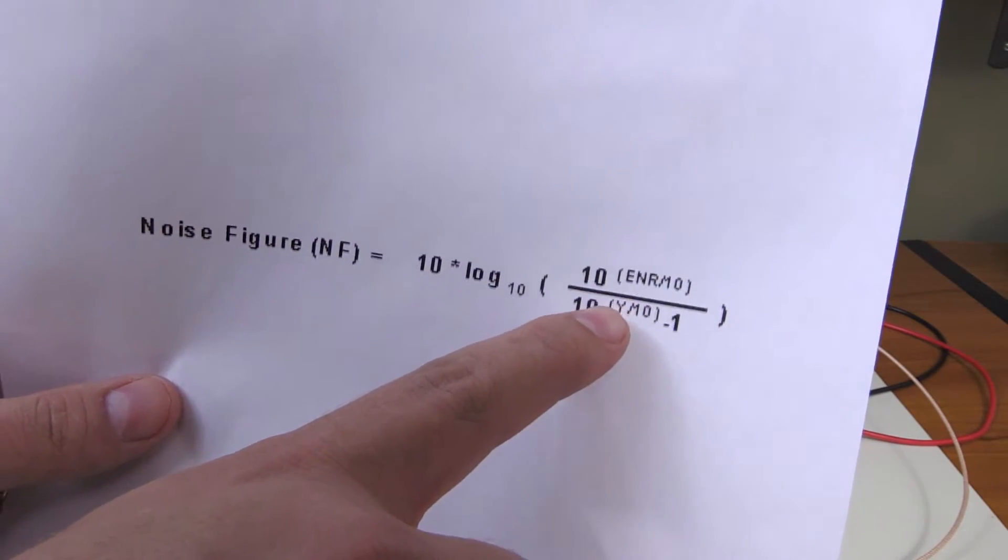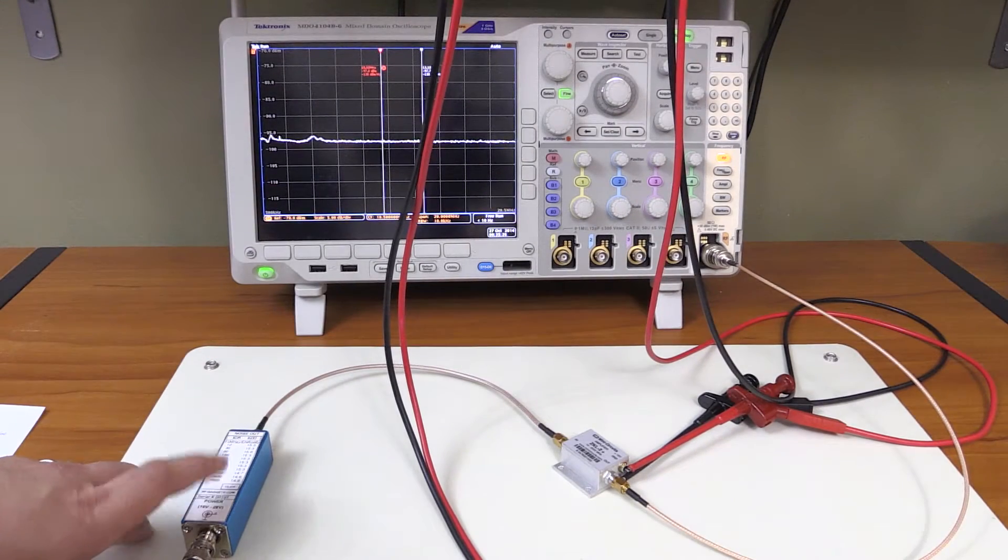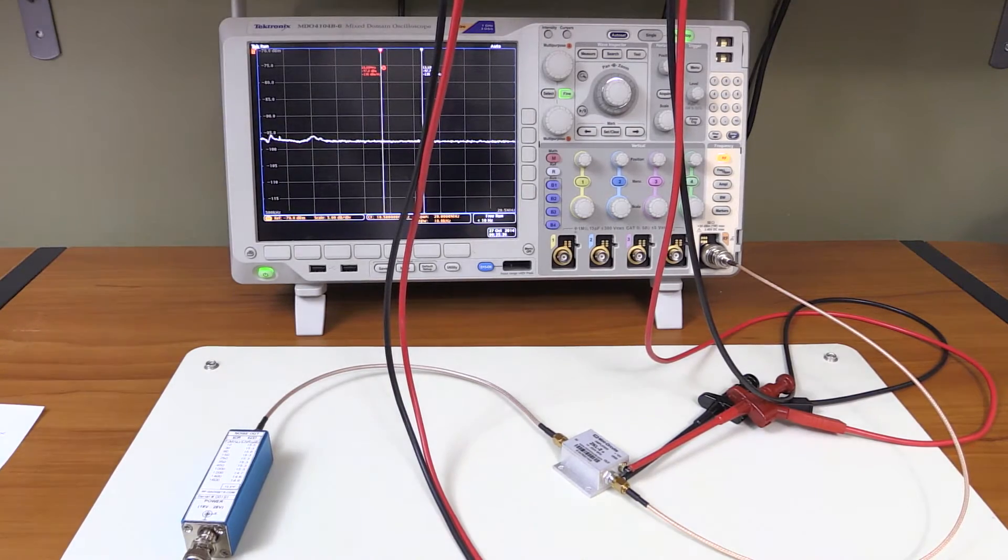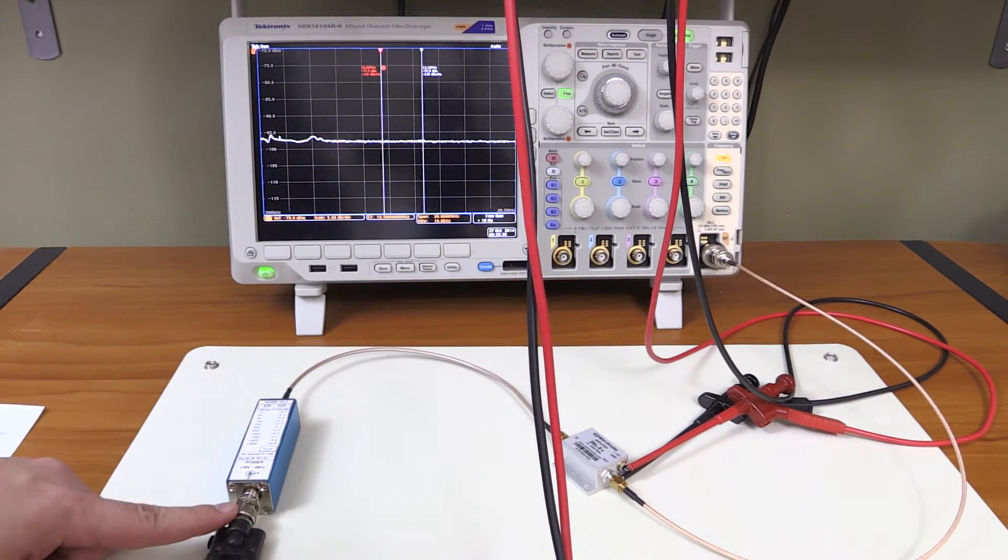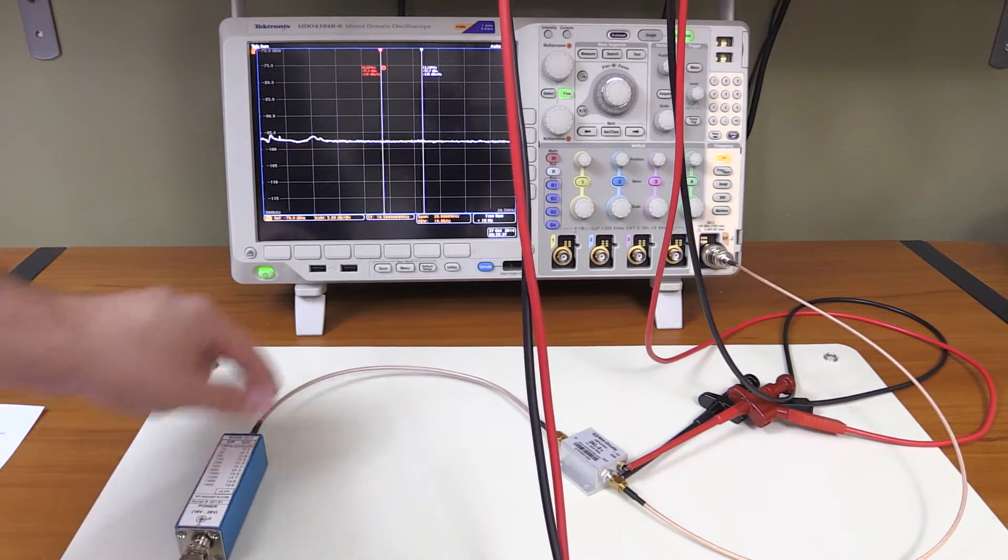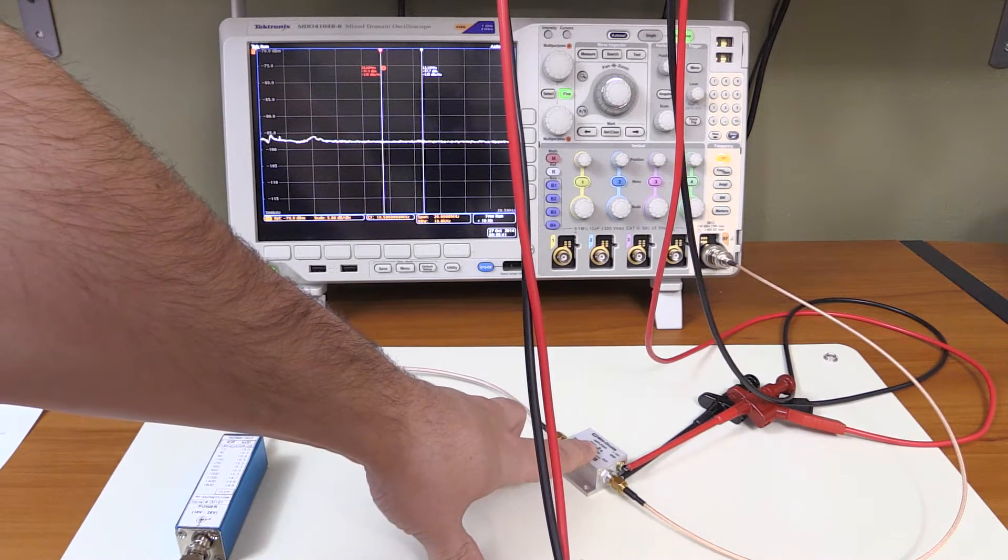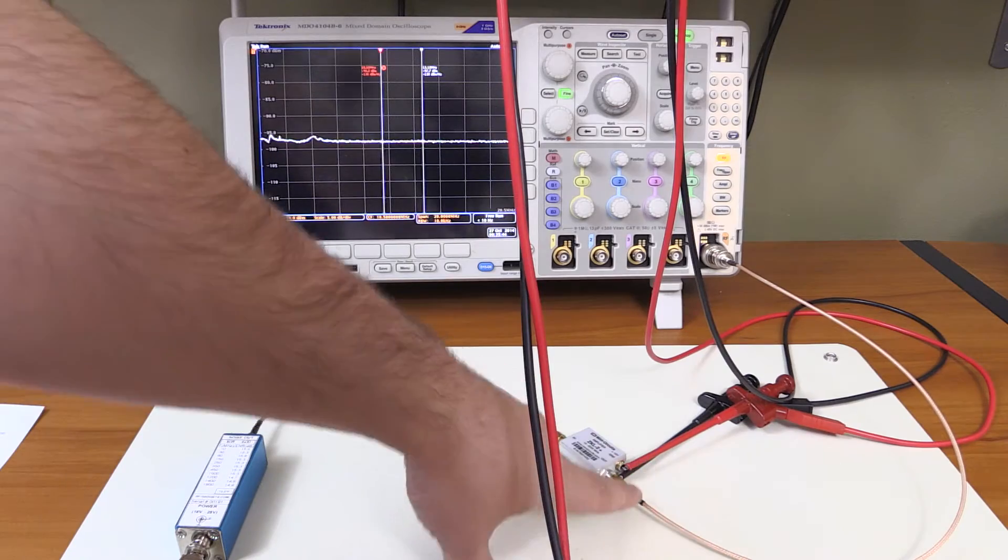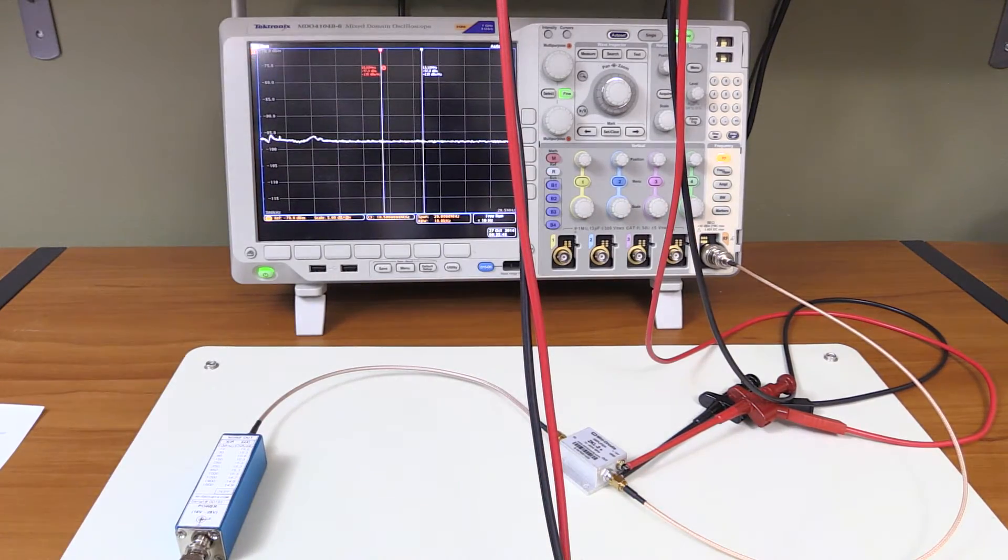The Y-factor itself is just the difference of the power output with the noise source turned on and the noise source turned off. We have a little bit of power coming down here going into the noise source, then the noise comes out and goes straight into the ZKL-2 Plus amplifier, which is our device under test. That output is going into the MDO-4000, which we're using as a spectrum analyzer.